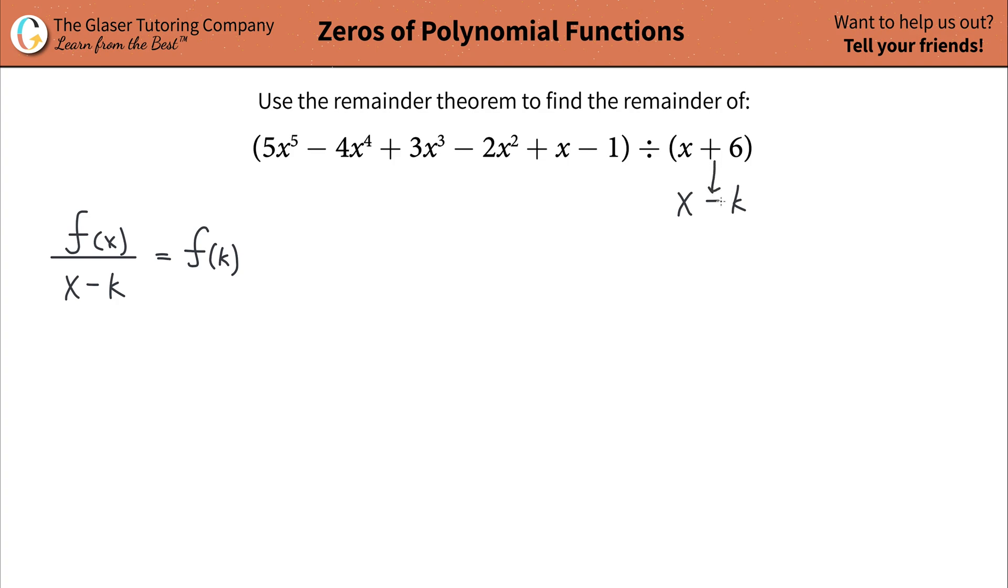Now you have to match this up to this model. So in other words, you're going to take this x, and then you're going to switch this sign, make it a minus. But you cannot plug in a 6 here because x minus 6 is not the same thing as x plus 6. So what you have to do is basically flip the sign of your 6.